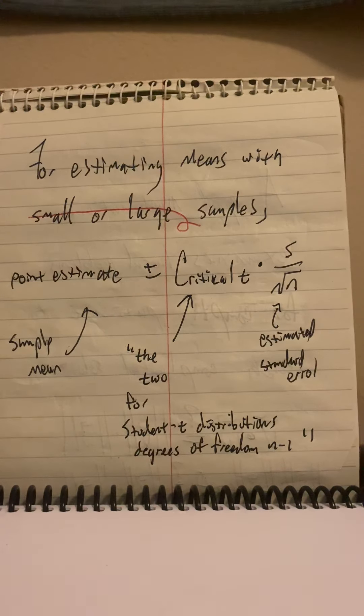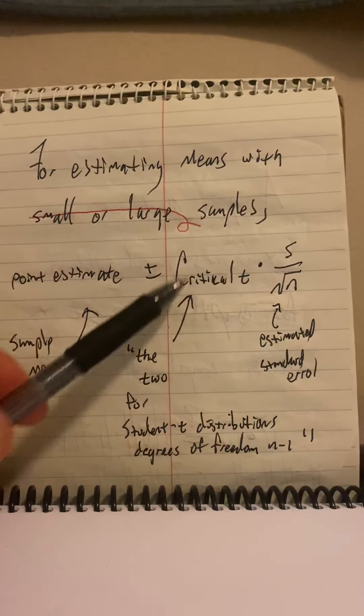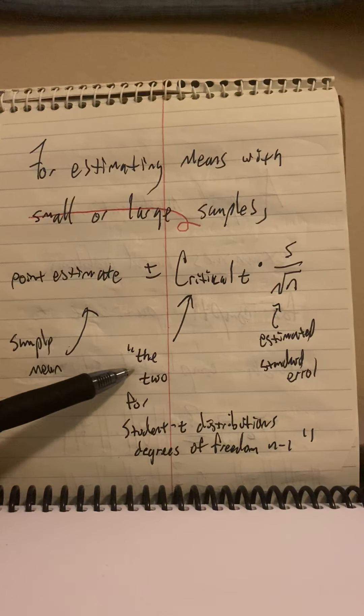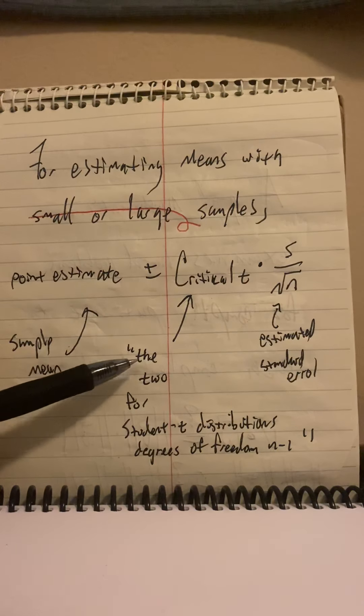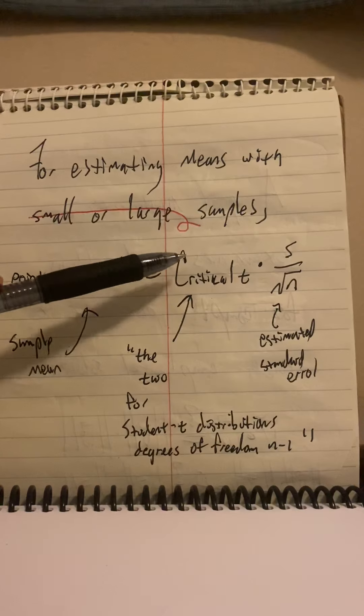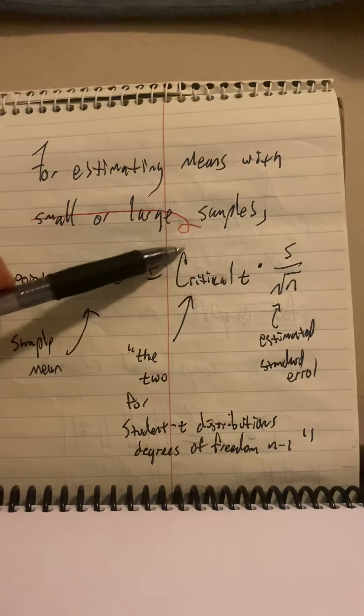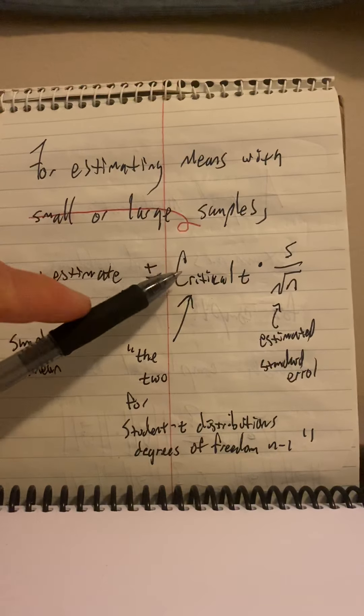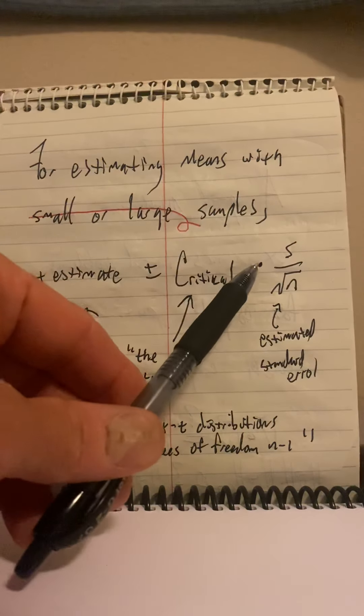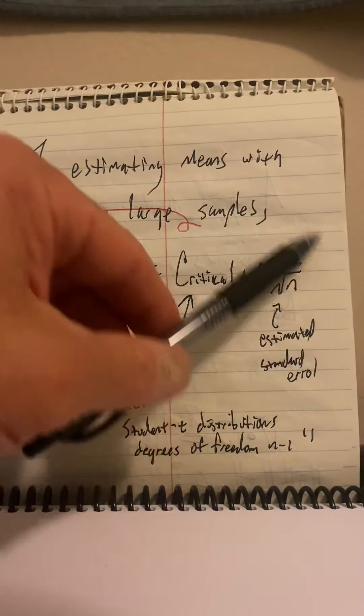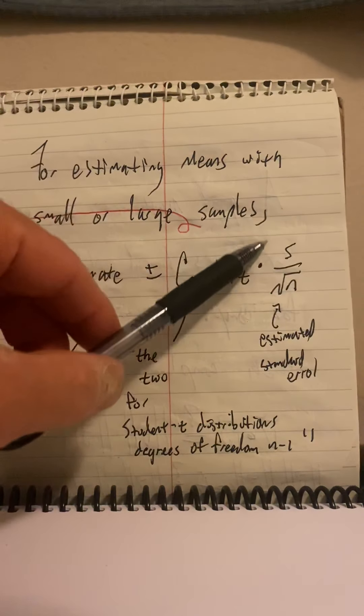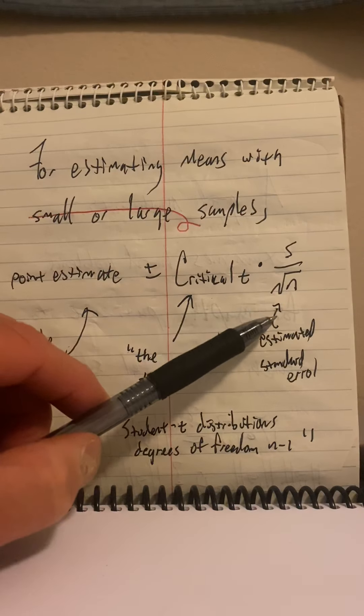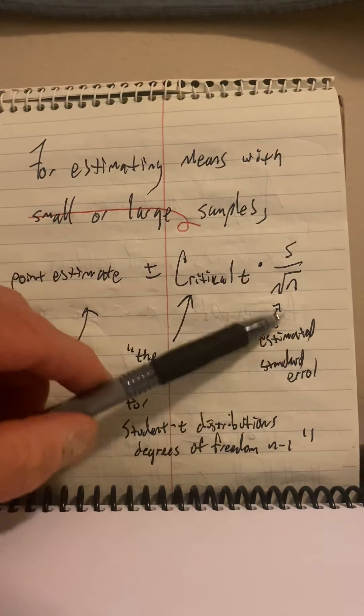There's an infinite number of samples based on the infinite number of sample sizes you could choose. So we call these the student T distributions of degrees of freedom of sample size minus one. And this is where we get our two, what we think of as our two, but it's not quite a two, which is why we're using a student T instead of a normal distribution. We think of this as our special two, but the statisticians call it the critical number or the critical T.